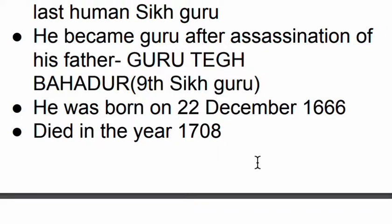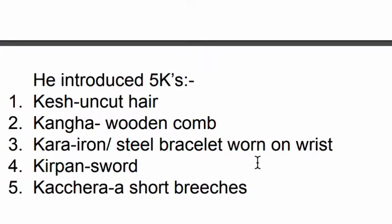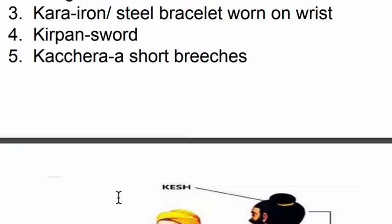He introduced the Five Ks for Sikhs. These are: Kesh, the uncut hair; Kanga, the wooden comb; Kara, an iron or steel bracelet worn on the wrist; Kirpan, the sword; and fifth is Kachera, which is short breeches.